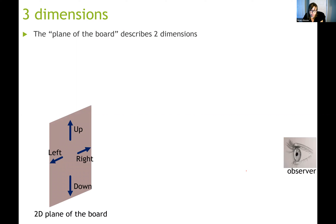In a two-dimensional plane like your computer screen, you can define two perpendicular directions. One is horizontal — one sense is to the right, the other is to the left. The other is vertical — one sense is going up, the other is going down. I use the word 'sense' to describe the way of pointing in a given direction, since English doesn't have unique words for this. Up and down are senses of the vertical direction; left and right are senses of the horizontal direction.